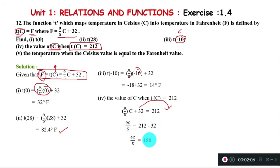Continuing the calculation: 180 divided by 9 equals 20. Using cross multiplication with 5, the answer is 100. Therefore, C = 100 degrees Celsius.